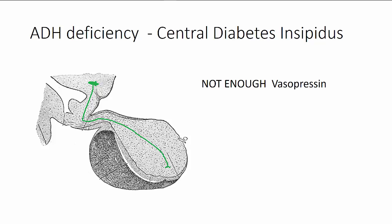Since ADH is made in the hypothalamus and carried to the posterior pituitary along nerve tracts, anything that disrupts either its formation or its movement to the posterior pituitary can be a cause of central diabetes insipidus. These causes can include things like trauma, infection, vascular disease, blood clots for example, or congenital absence of antidiuretic hormone formation, among other things.